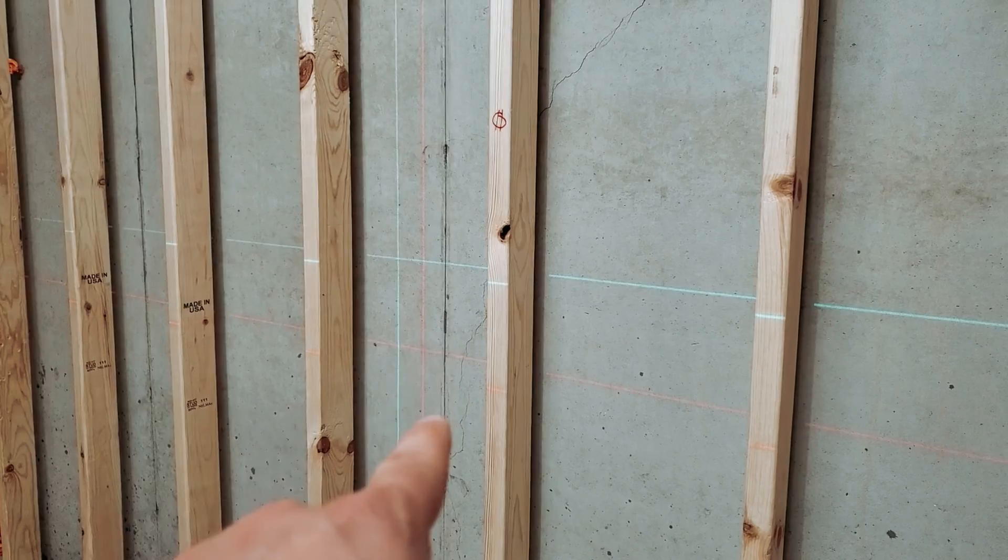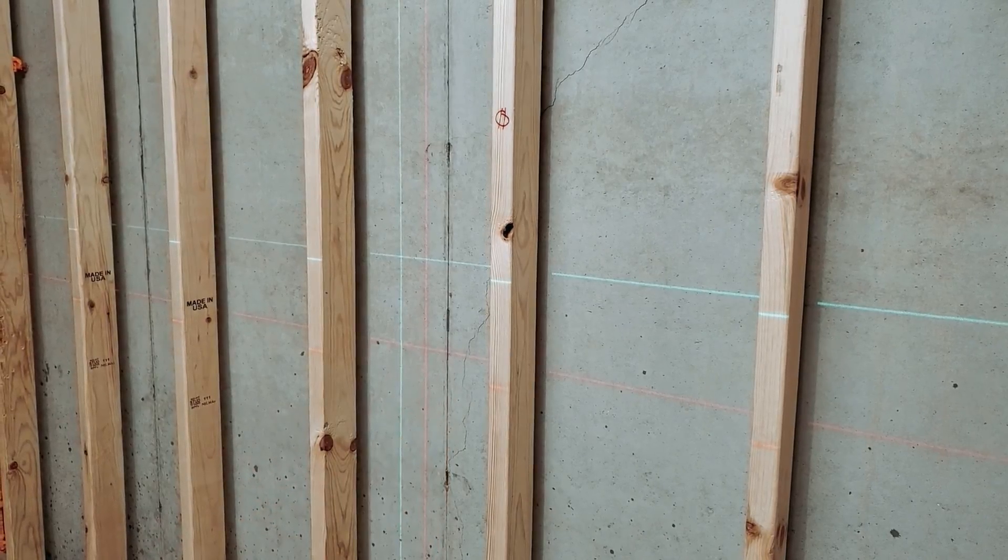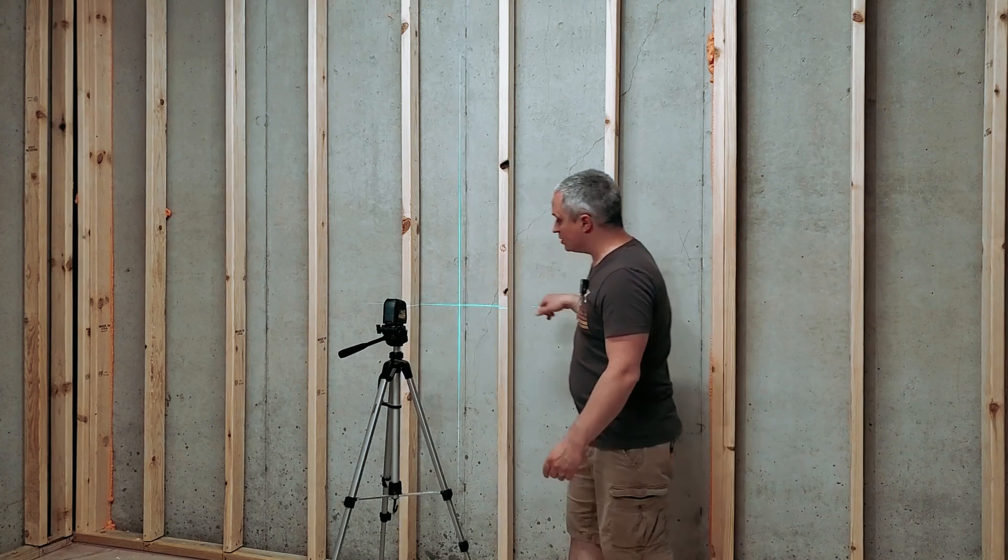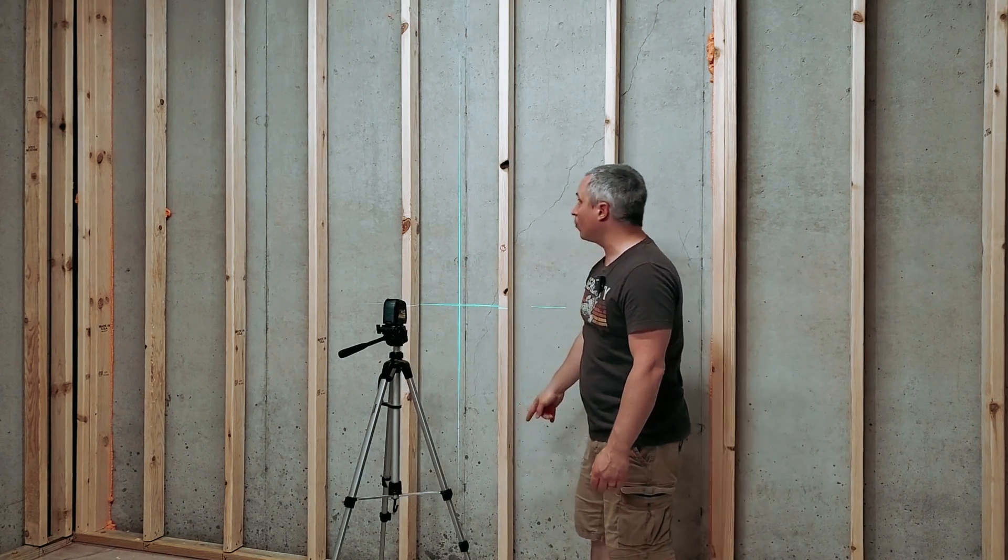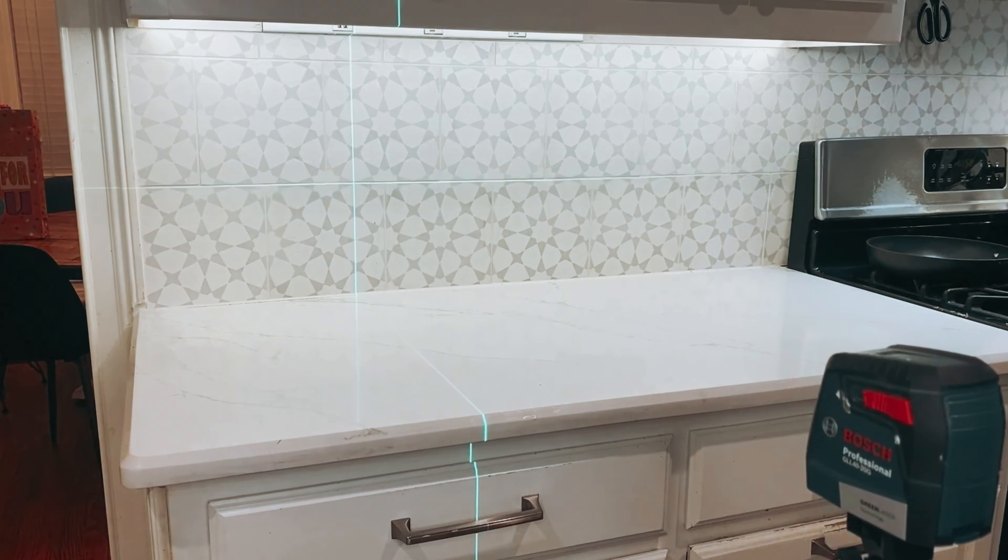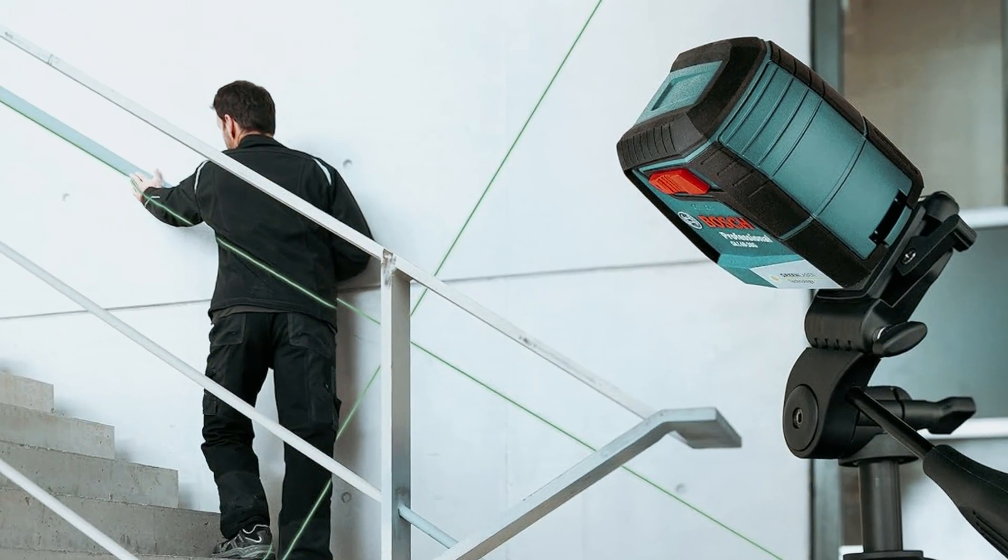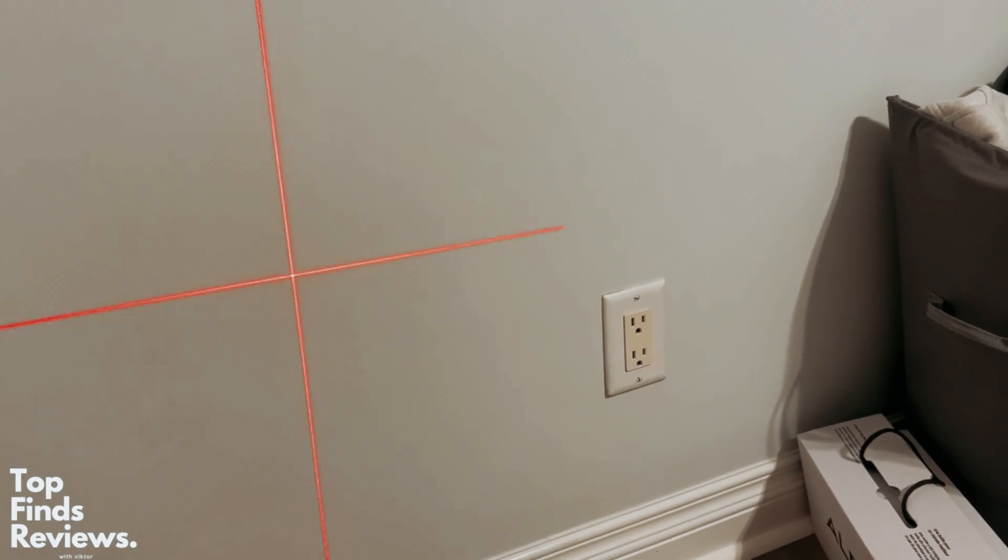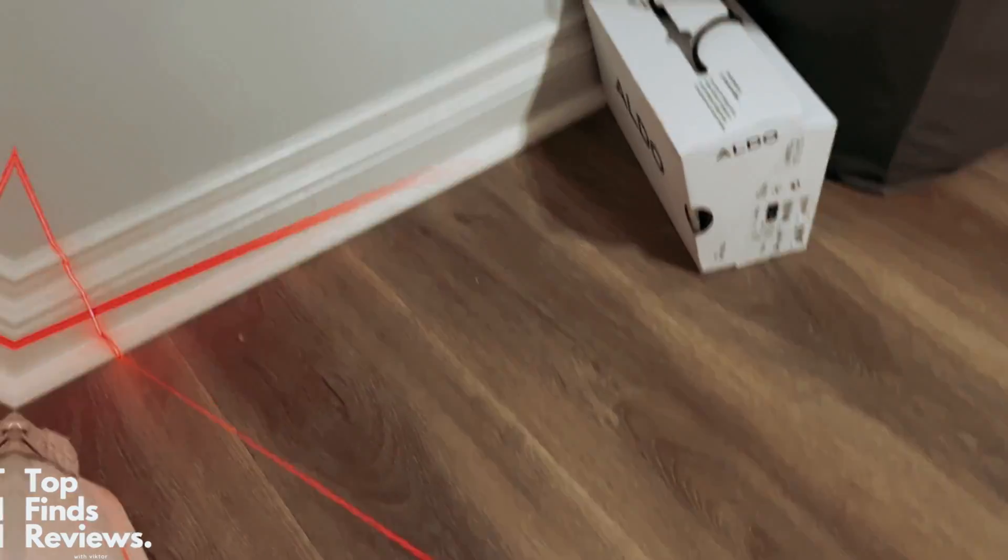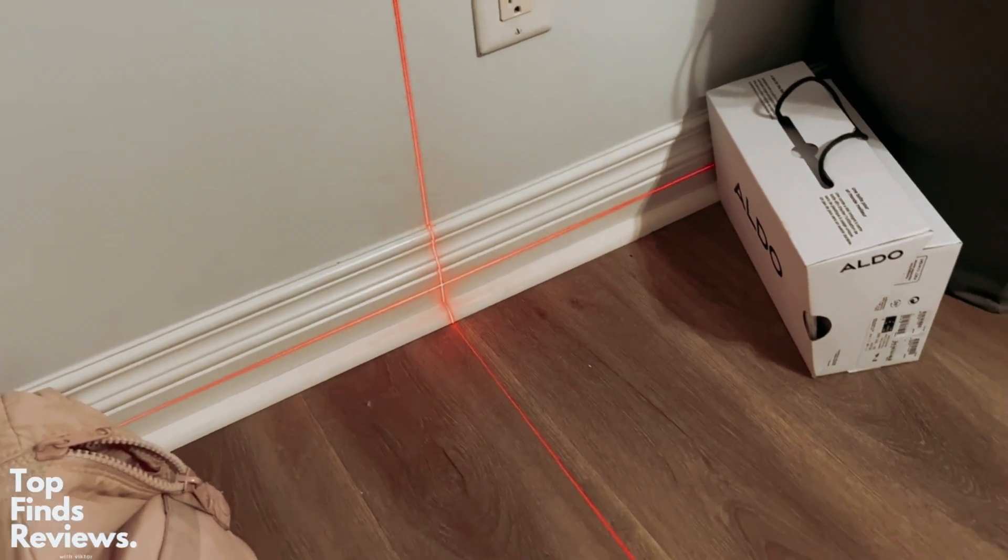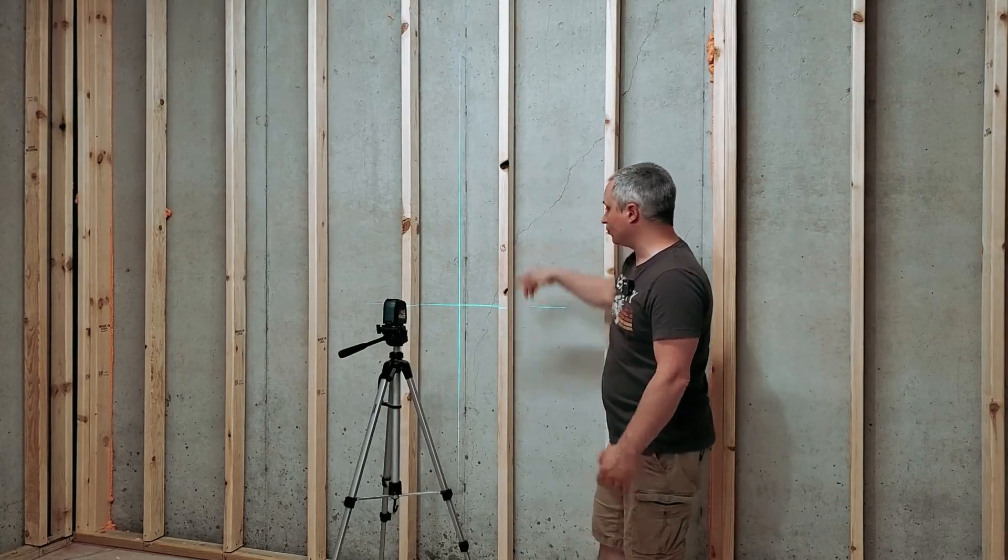Setting up the Bosch GL4020G is quick and hassle-free thanks to its crossline functionality that projects two bright lines that are precisely level and plumb. The included 2mm mounting device allows for easy attachment to multiple surfaces, while the rotating 360-degree neck enables fine-tuning for perfect alignment. Whether you're working on construction projects, interior design tasks, or DIY home improvements, the Bosch GL4020G is a reliable and efficient tool that will help you achieve professional results with ease. Its combination of advanced features, user-friendly design, and impressive visibility make it a must-have for anyone in need of a high-quality crossline laser.